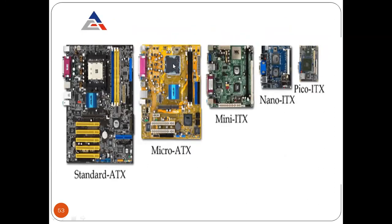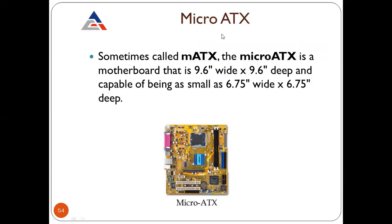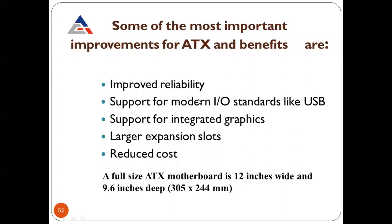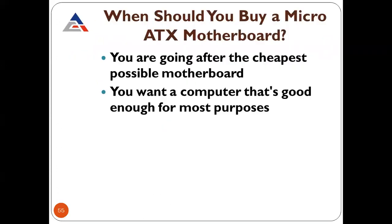Standard ATX looks like this. Then we have Micro ATX, Mini ITX, and Nano ITX or Pico ITX — these are the types of motherboards. Micro ATX, sometimes called M-ATX, is a motherboard that is 9.6 × 9.6 inches and can be as small as 6.75 × 6.75 inches. It works just like ATX but is smaller in size.